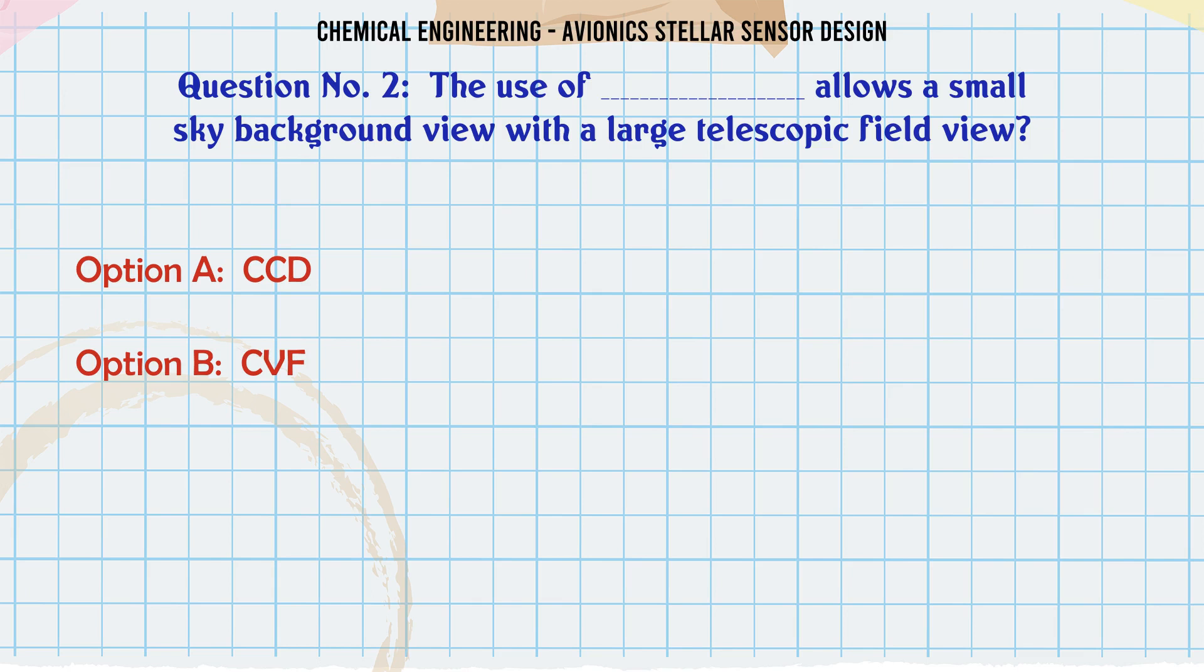The use of what allows a small sky background view with a large telescopic field view? Options: A. CCD, B. CVF, C. VVR, D. CSK. The correct answer is CCD.